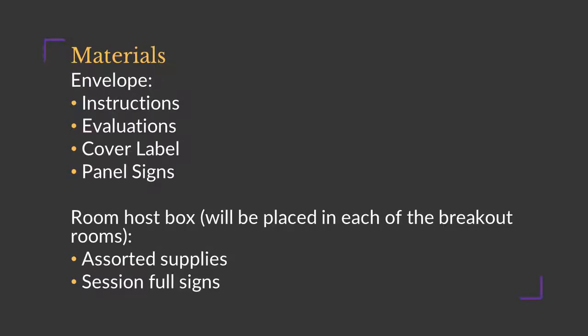Breakout session hosts will receive an envelope for each session, which we call our RoomHost Packet. The front of the envelope will give details about your session such as the room assigned, speakers, and possible AV equipment requested. Also on the envelope will be contact numbers of the registration desk staff and some questions that need to be answered before returning the envelope at the end of the session. One of the most important questions is how many people were in the room — we need this number for our post-event reporting. In the envelope will be a sheet that outlines your responsibilities as a RoomHost. You may also have session evaluations for distribution and, if your session is a panel, panel signs for the head table.